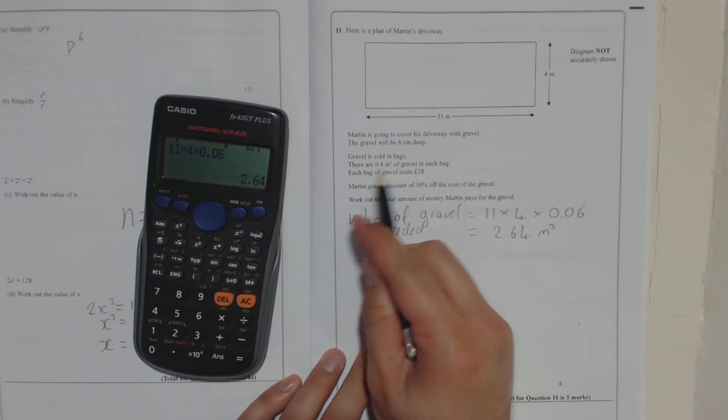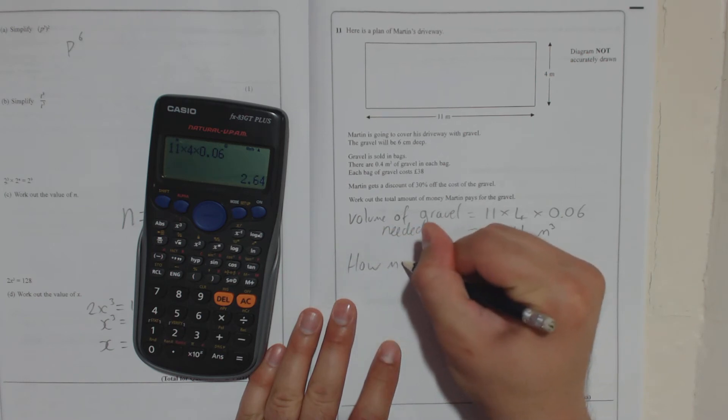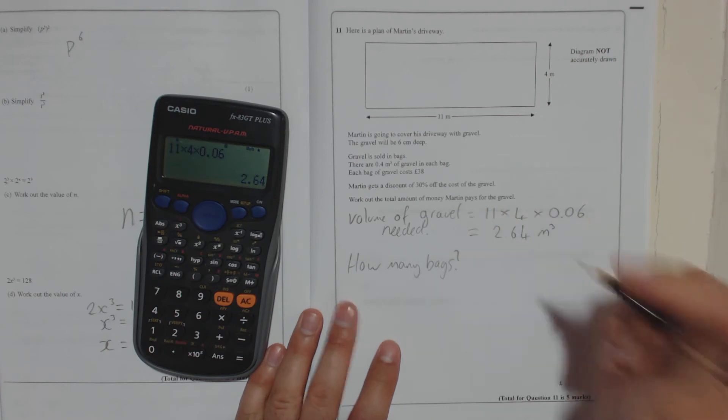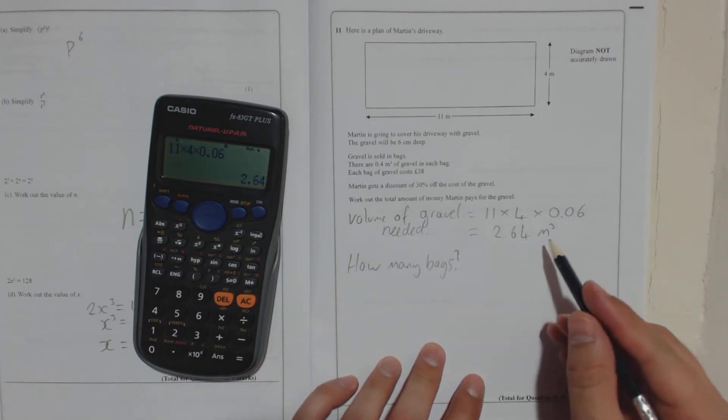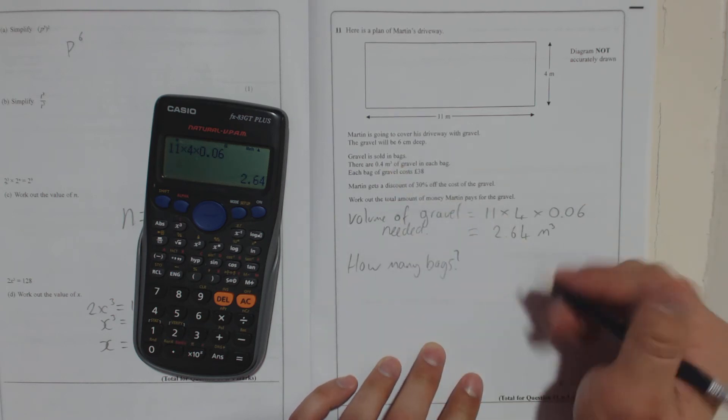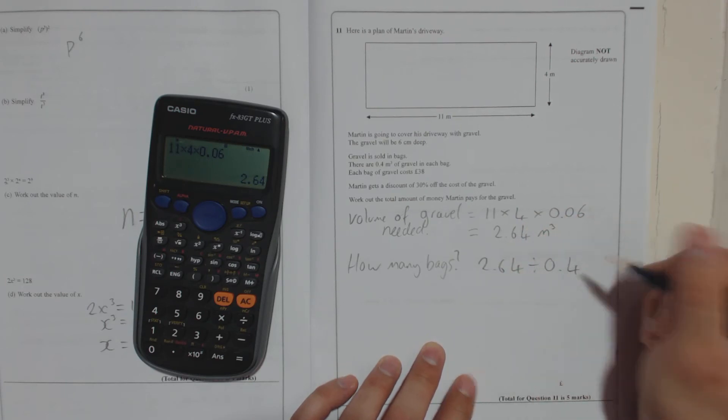Gravel is sold in bags. There are 0.4 metres cubed of gravel in each bag. So how many bags? So we need to work out how many 0.4's he needs because there's 0.4 in each bag. So we need to do 2.64 divided by 0.4.